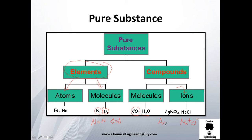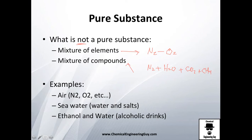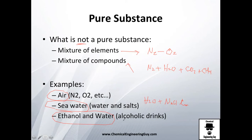What is NOT a pure substance? Mixtures of elements — for example, a mixture of nitrogen and oxygen — are by definition a mixture. Mixtures of compounds include air (N2, water vapor, CO2, methane, and many other gases), seawater (water with salts like calcium and magnesium), and ethanol and water, which makes up alcoholic drinks along with other flavors and materials.